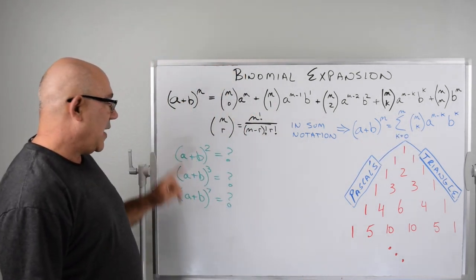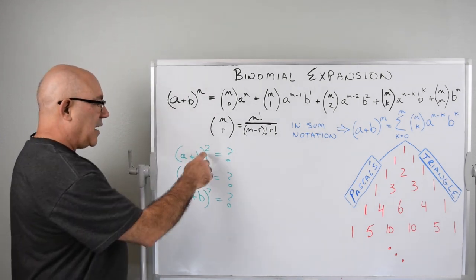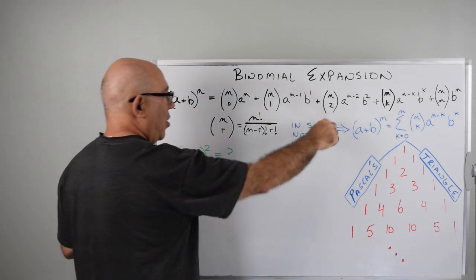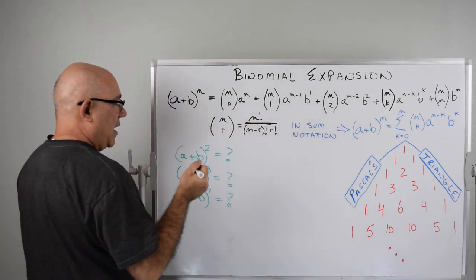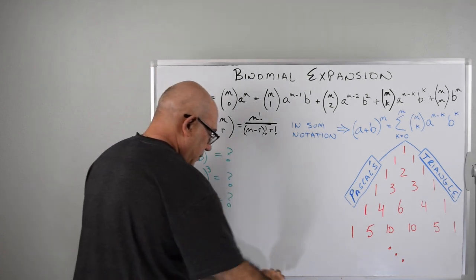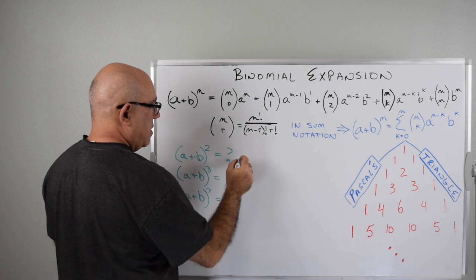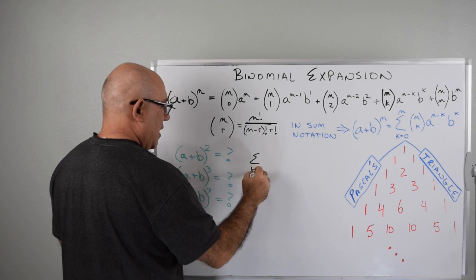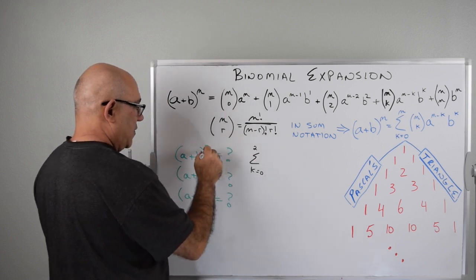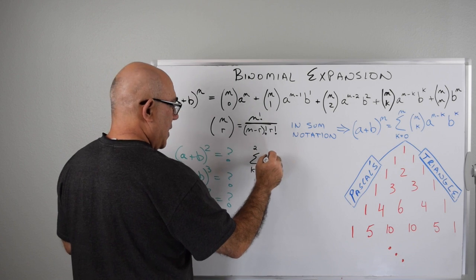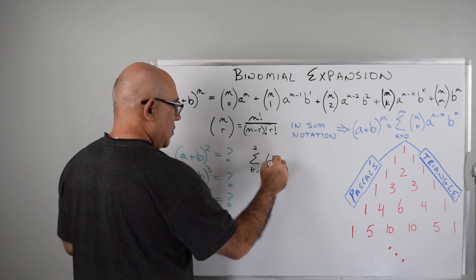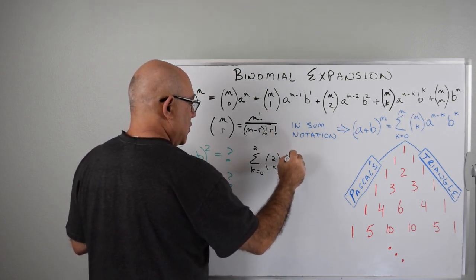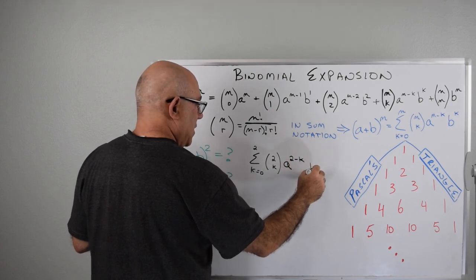So let's try that on A plus B squared. In this case N equals 2. We're going to do it the hard way first. This is going to equal the sum of K equals 0 to 2, because N is 2, of combination(2, K) times A to the 2 minus K times B to the K.